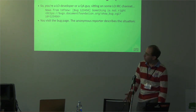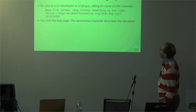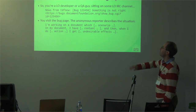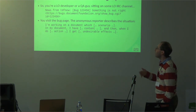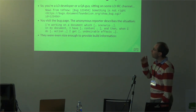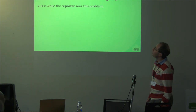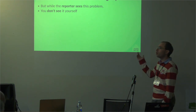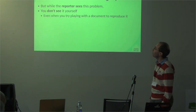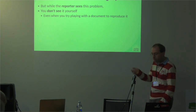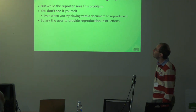You visit the bug page and they describe the bug: I have this document, I'm doing this thing and that thing, and this is what I get. They even provide some build information, which is really great. But even though they can see the problem, you might not see it. You try to follow the instructions, you play with the document a little, but you still don't see it.